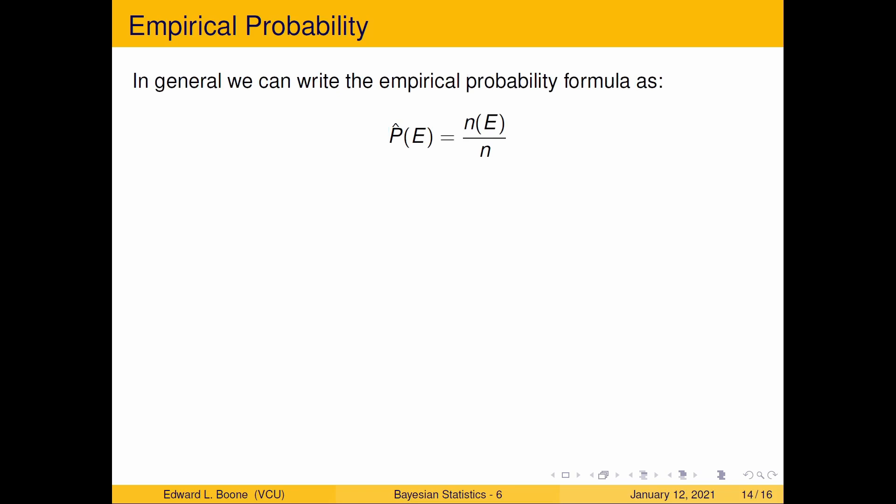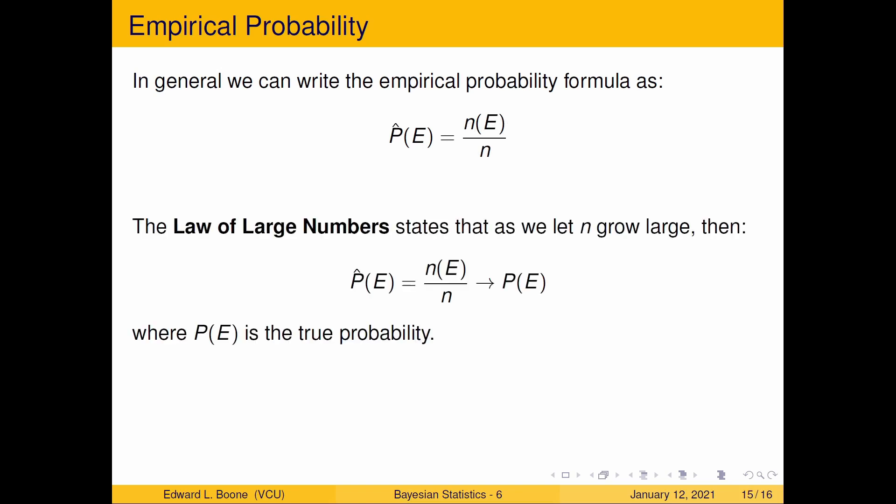In general, we can write the empirical probability formula in this way. We're going to put a P with a hat. E is the event, which is number of cars or number of whatever, and the event we're interested in. And here, we're just going to say the number of times we saw it over the number of times we observed it. This is exactly what you would do if you were thinking about it anyway. Most people would just naturally sort of gravitate to this.